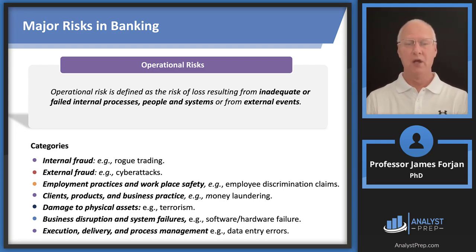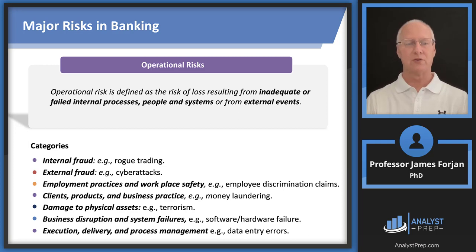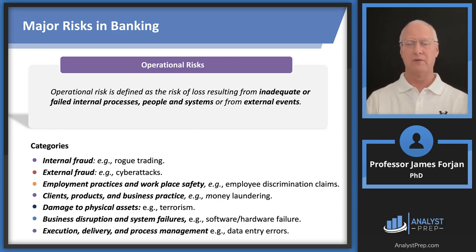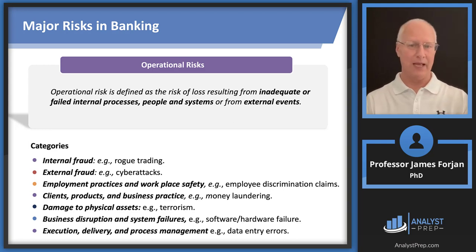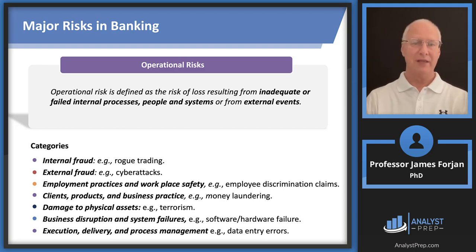Categories of operational risks include internal and external fraud, employment practices and safety, clients, products and business practices — notice there's some money laundering there. Damage to physical assets — this could result from terrorism, earthquakes, or hurricanes. Business disruptions, execution, delivery, and process management. GARP on an exam question would likely give you an example that enables you to identify one of these categories — but remember, the correlation between and among these categories is not zero, so there has to be some relationship in there.